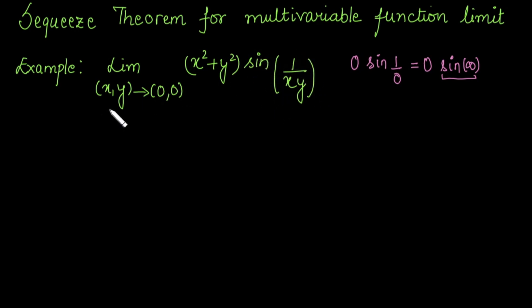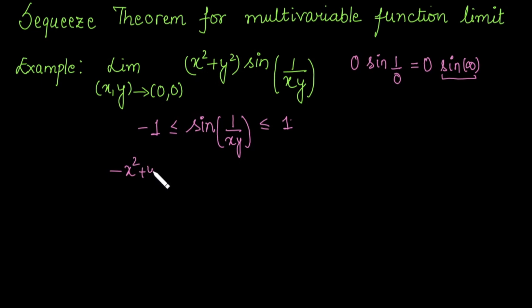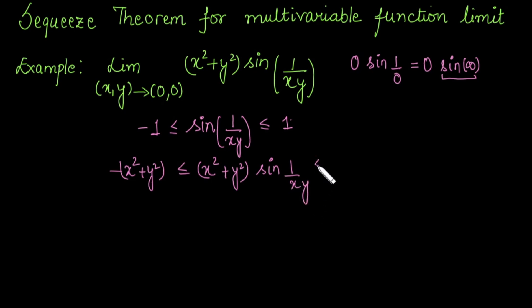Since (x, y) is approaching (0, 0), for any point near the origin xy is a real number, so 1/(xy) is a real number, and therefore sin(1/(xy)) always lies between -1 and 1. Since x² + y² is always positive, we can multiply the inequality to get: -(x² + y²) ≤ (x² + y²) sin(1/(xy)) ≤ (x² + y²). Now we apply the limit as x → 0 and y → 0.